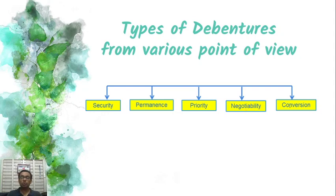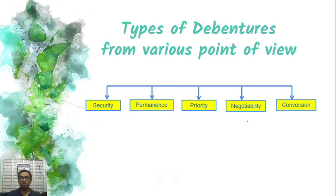From the conversion point of view, there are non-convertible debentures and convertible debentures. To summarize the main classifications: 5 points of view — security, permanence, priority, negotiability, and conversion.